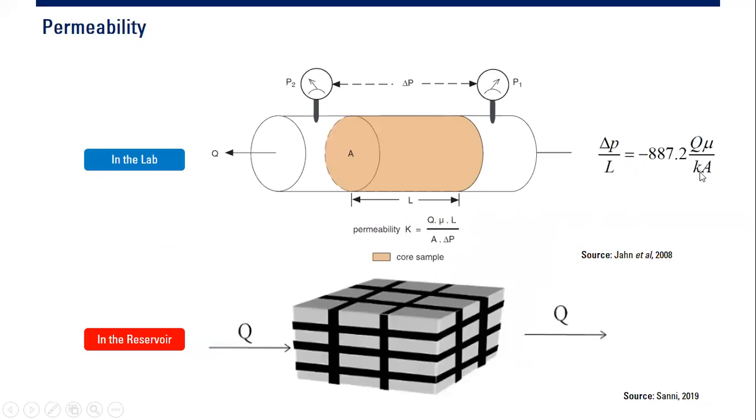Here is another depiction. We have a pipe and we put a core inside the pipe with area A, the area of the flow, and flow rate Q. We can measure the pressure difference delta P from P1 input pressure and P2 output pressure, and again the correlation is established.